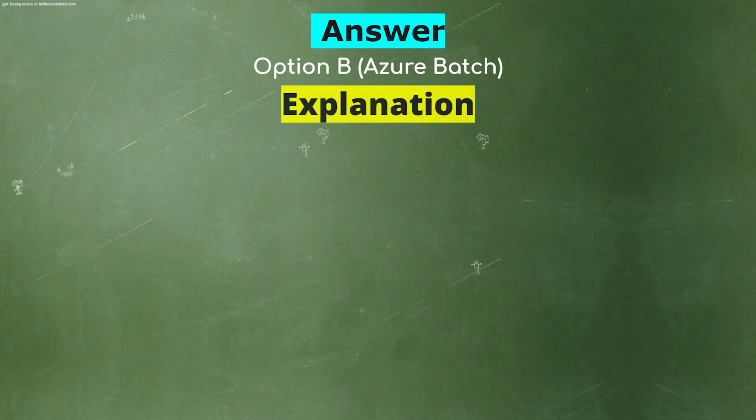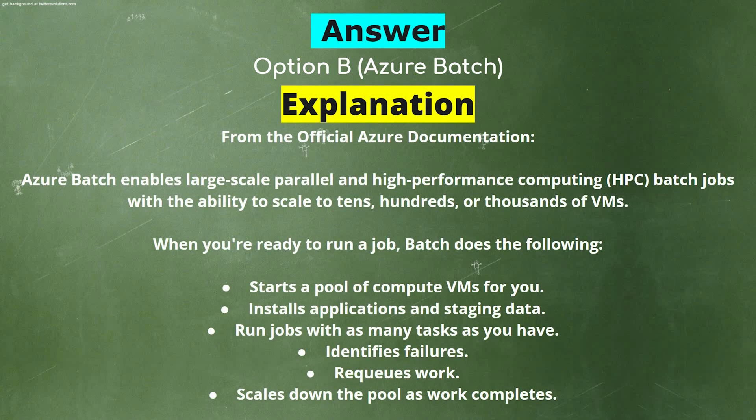Explanation: Azure Batch enables large-scale parallel and high-performance computing batch jobs with the ability to scale to tens, hundreds, or thousands of VMs. When you are ready to run a job, Batch: 1) Starts a pool of compute VMs, 2) Installs applications and staging data, 3) Runs jobs with as many tasks as you have, 4) Identifies failures, 5) Requeues work, 6) Scales down the pool as work completes.